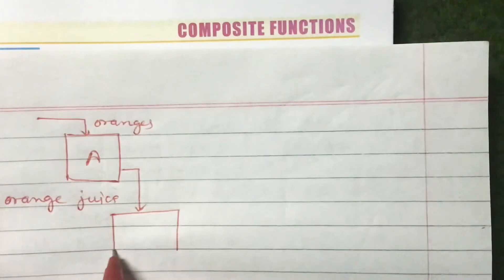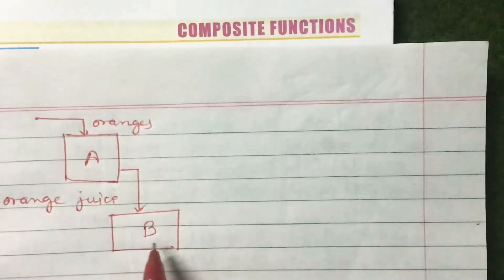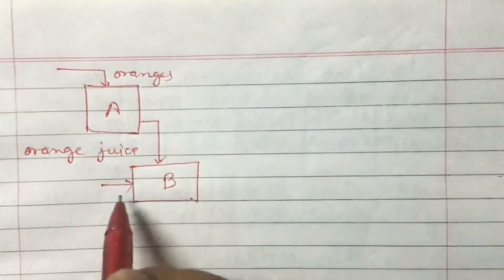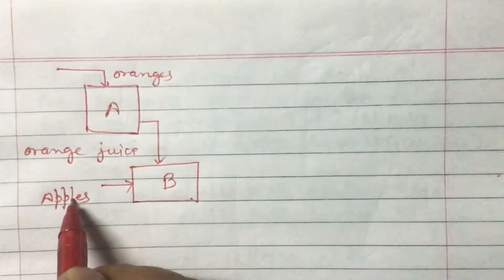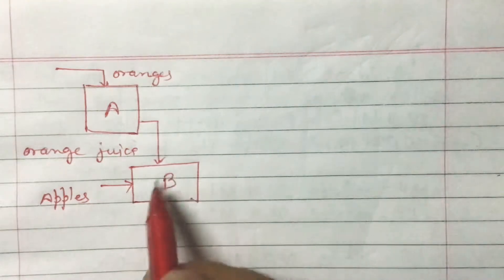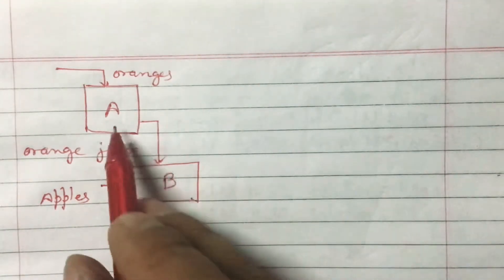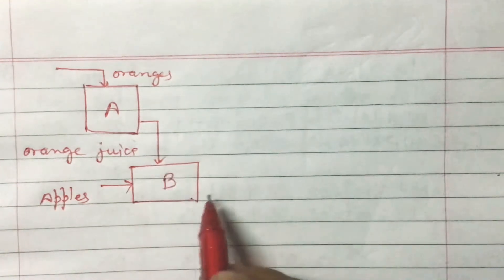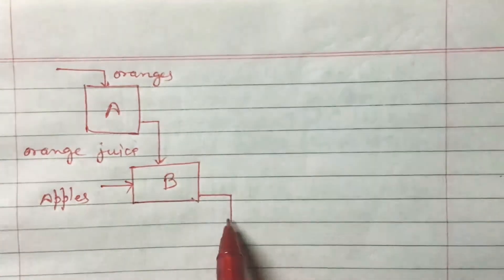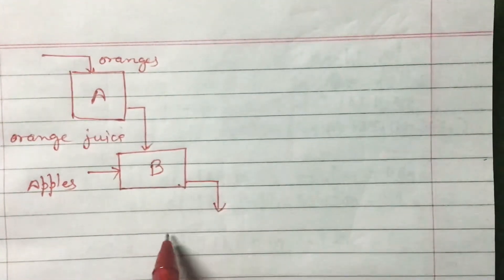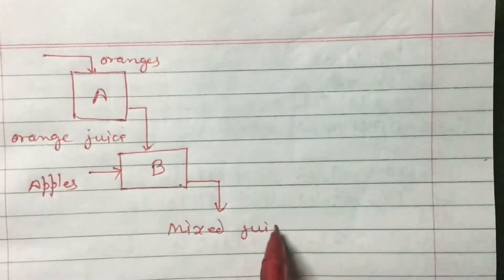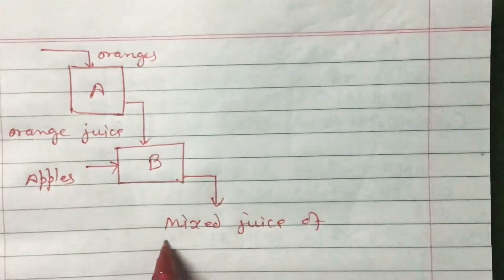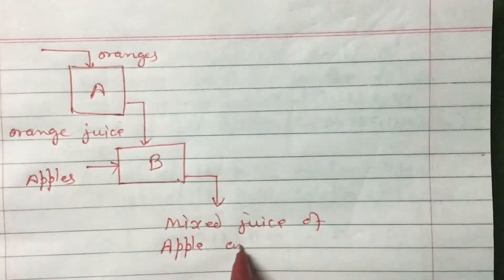There is another machine, Machine B. If you put some apples in this machine, Machine B will grind them, make paste, and if you mix in the orange juice, the final product of these two machines will be mixed juice of apple and orange.